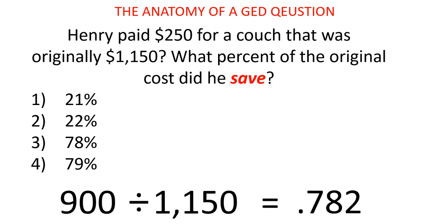So you would see that if you made the mistake, you might choose an answer of 21% or 22%. But in this case the answer would be 0.782, or just 78%. This is how the GED test works, and these are the skills that I am teaching every day to my students so that they can have success on the GED test.